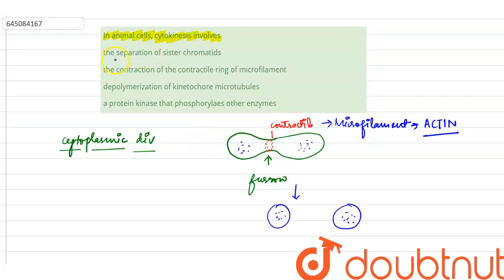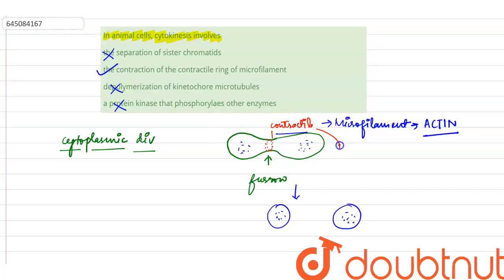So if you see the options here: the first option — separation of sister chromatids — that occurs in our telophase, so this option is wrong. The second option says the contraction of the contractile ring of microfilament — this statement is correct. Third, depolarization of kinetochore microtubules — this option is also wrong. Fourth, a protein kinase that phosphorylates other enzymes — this option is also wrong. So our correct option is due to the formation of the contractile ring. The correct option is option number two.